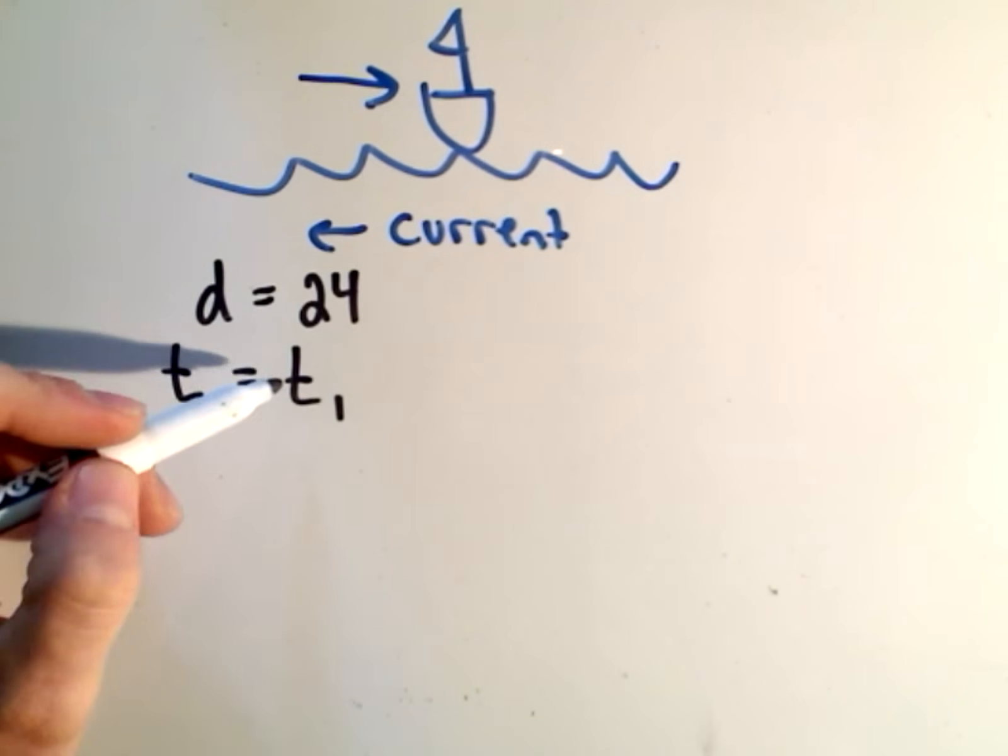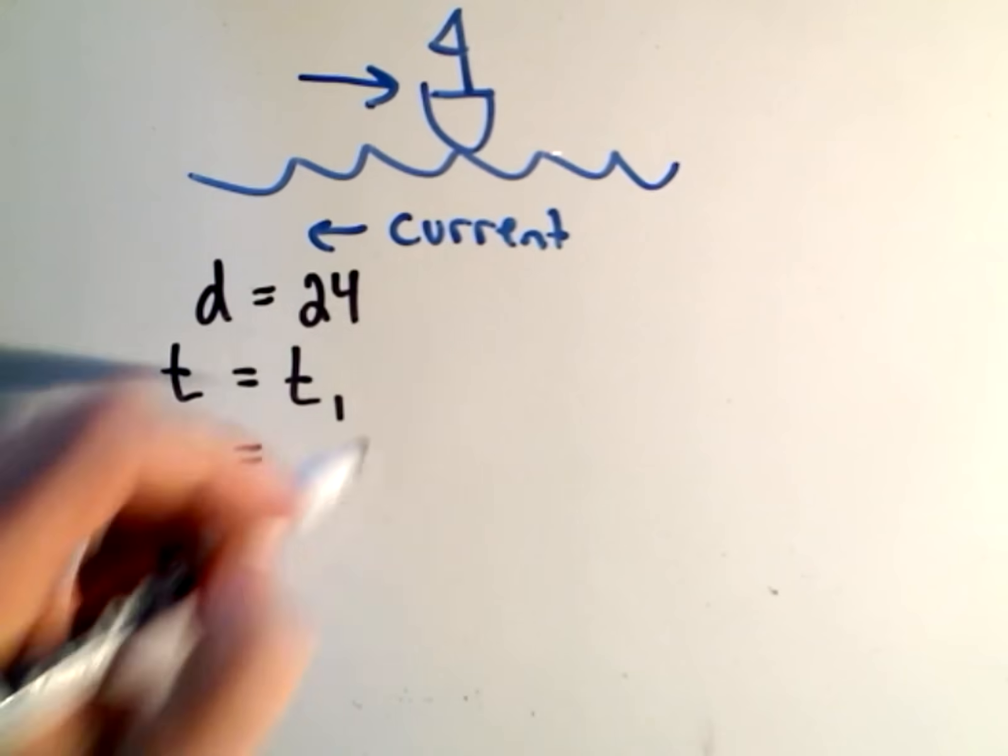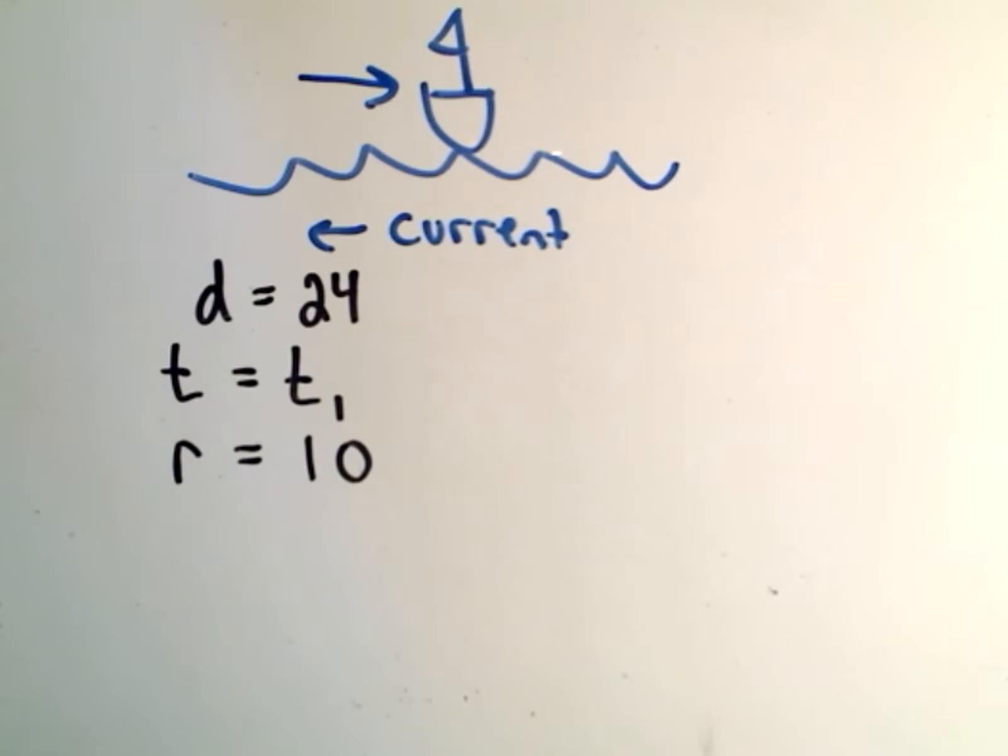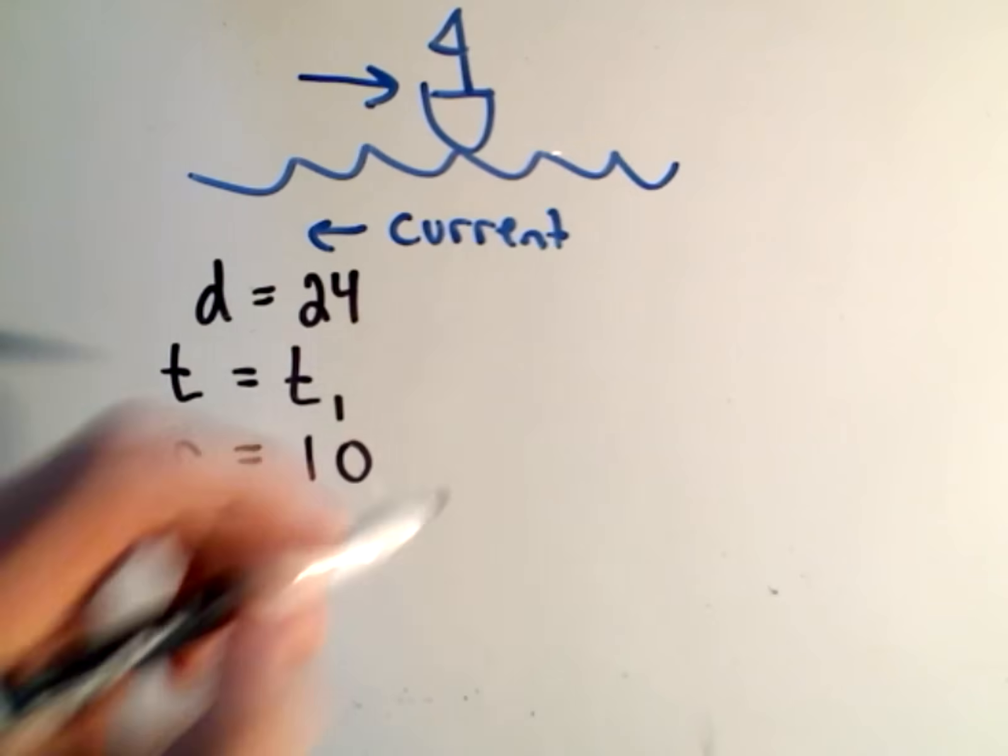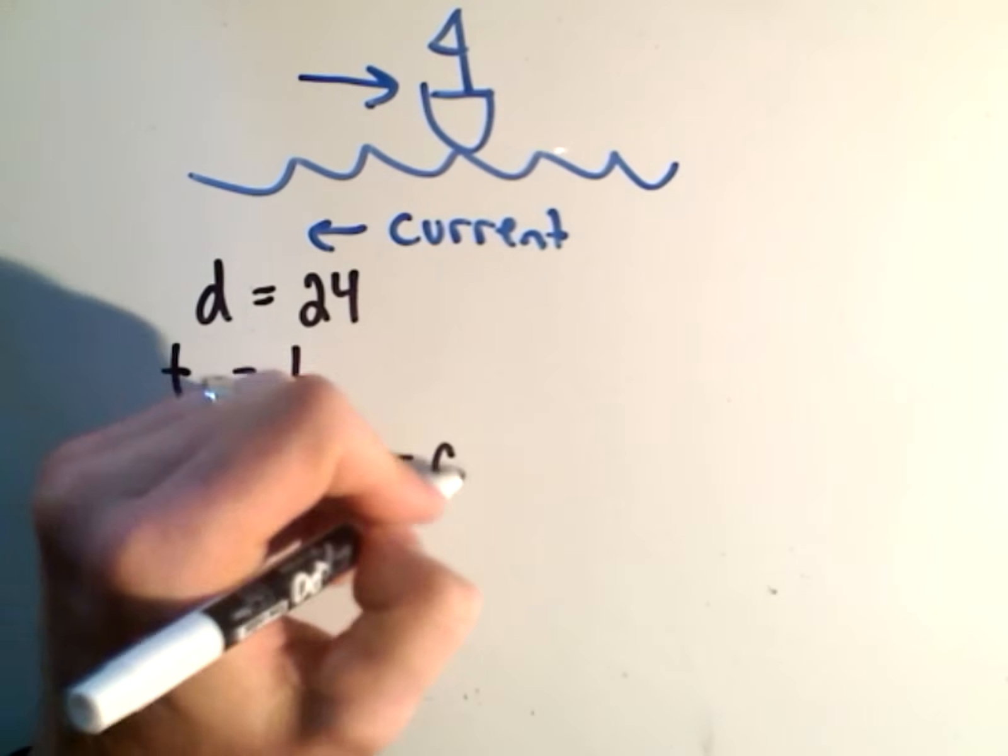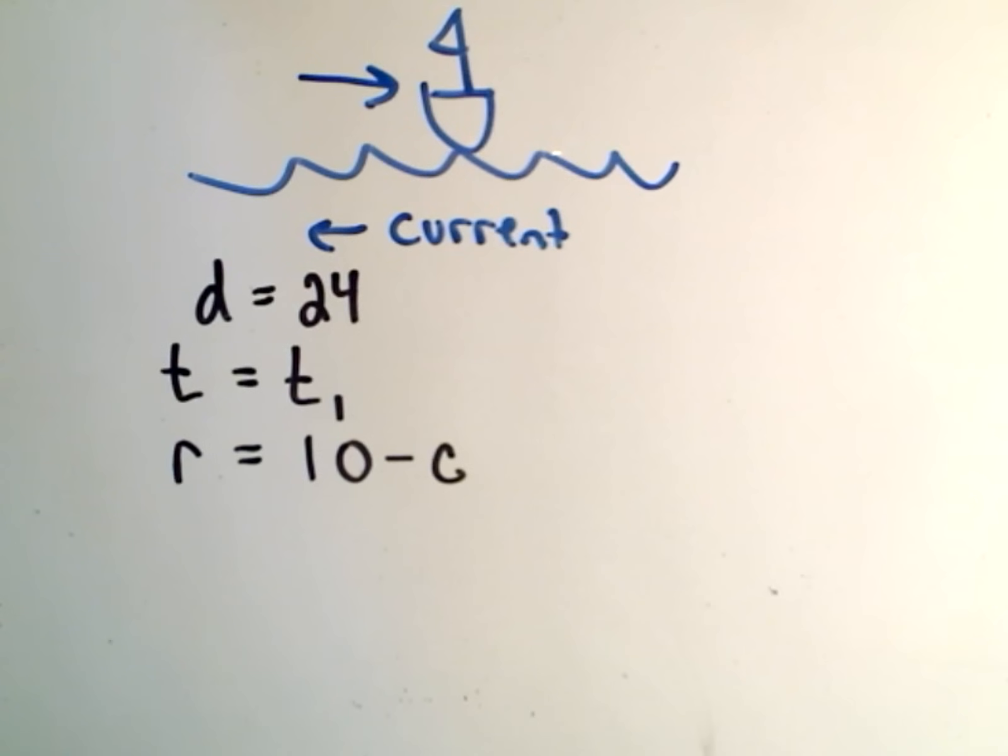Okay, we're not quite sure what it is. The rate that the boat moves at, it's going to be the original 10 miles an hour that it goes in still water, but since the current is pressing against the boat, we'll subtract away the speed of the current.